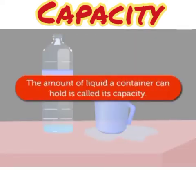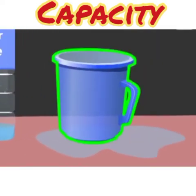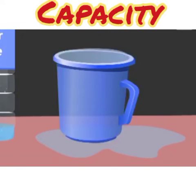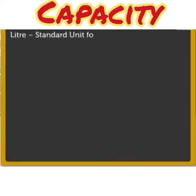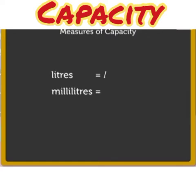So we can say the amount of liquid a container can hold is called its capacity. Litre is the standard unit of capacity. To measure capacity, we use litres and millilitres. Short form of litre is L and short form of millilitre is mL.